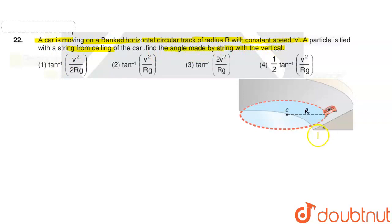So in this question, let's see what we have given. The car is moving on a banked horizontal circular track with constant speed v. This car is moving at constant speed on a circular track.